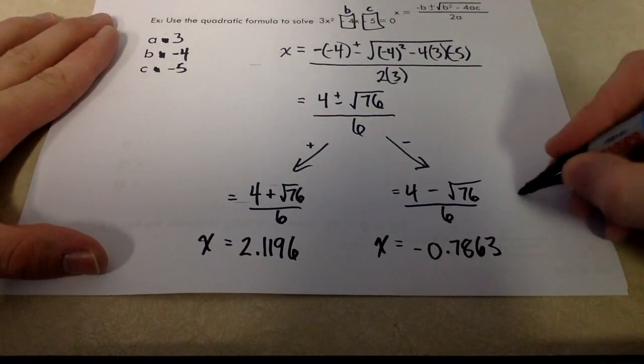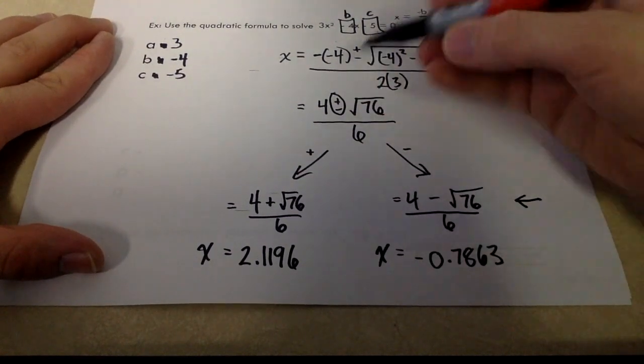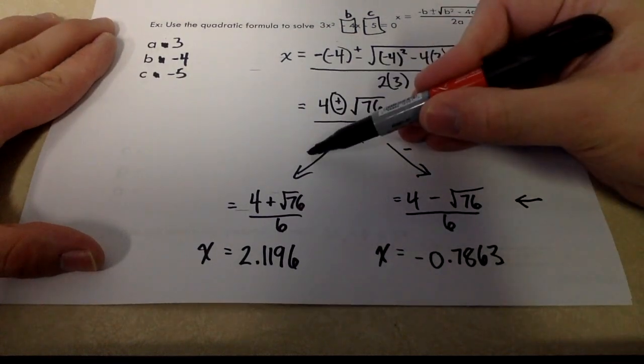There's nothing wrong with showing this extra step here. And just remember, when you get to this point, we've got to deal with this plus or minus. So we do two separate solutions. One for the positive, one for the negative.